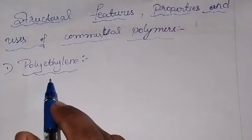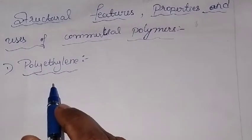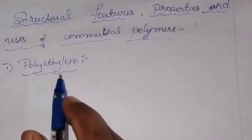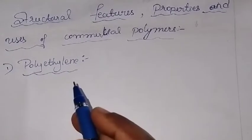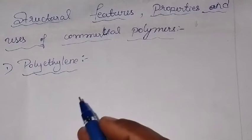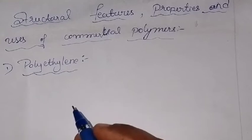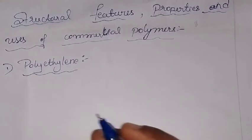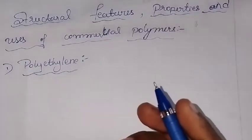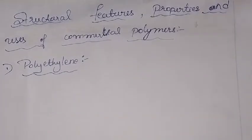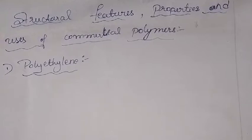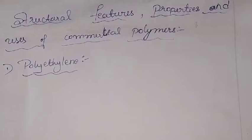In the later videos, we will be studying about polypropylene, polyvinyl chloride, polystyrene, polyesters, and polyamides. All these are the commercial polymers and we will be studying about their structural features as well as their properties and uses.